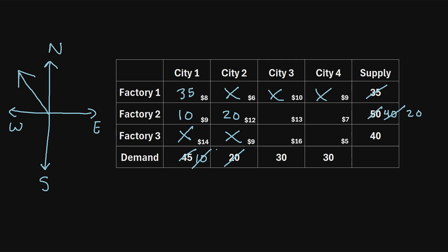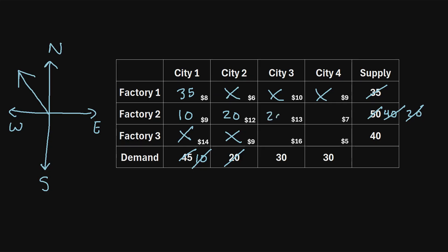Now we move on to the next column — city three. The next available cell is here. City three has a total demand of 30, so we meet as much as possible using factory two. Factory two has 20 supply left, so we use all of it, cross it out, and put 20 here. That leaves 10 demand remaining, so we reduce the demand by 20, making it 10. There's still 10 demand left, so we need to move down to the next cell.